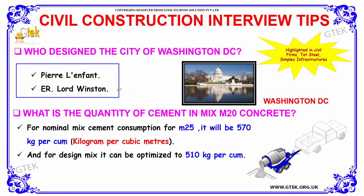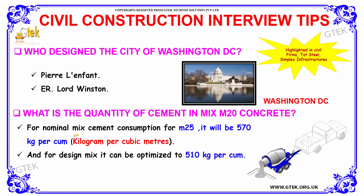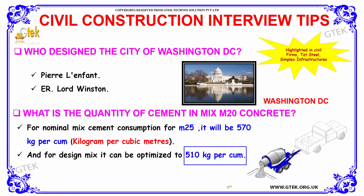What is the quantity of cement in M20 and M25 concrete? For a nominal mix, cement consumption for M25 is 570 kg per cubic meter. For a design mix, it can be optimized to 510 kg per cubic meter. That is the quantity of cement in M20/M25 concrete.